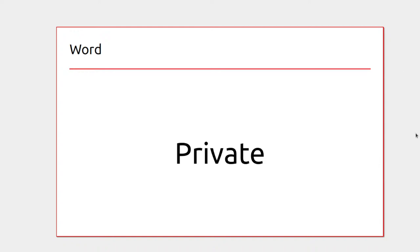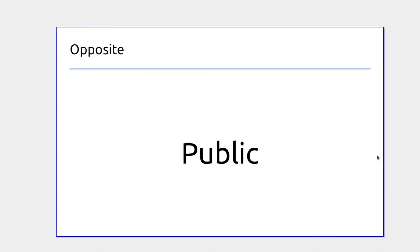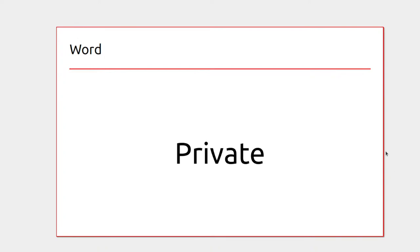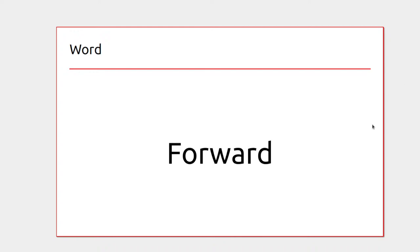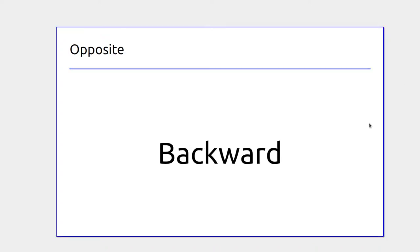The first word is private, and the opposite is public space. Private would be in somebody's house, whereas public would be out in the park. The next word is forward, as in a car going forward, and the opposite of that is backward.